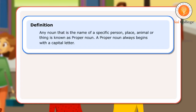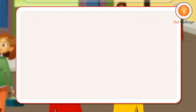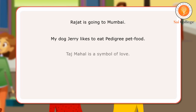Definition: Any noun that is the name of a specific person, place, animal or thing is known as a proper noun. A proper noun always begins with a capital letter. Let us look at a few sentences. Rajat is going to Mumbai. My dog Jerry likes to eat Pedigree pet food. Taj Mahal is a symbol of love.